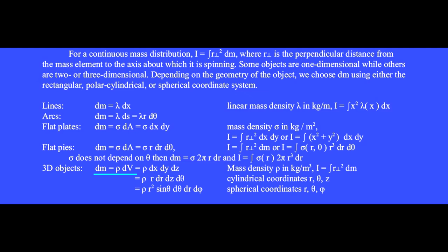In three dimensions, the differential mass is rho dv, where dv is the differential volume. For a block-shaped object, we use rectangular coordinates and the differential volume dv equals dx times dy times dz. In a cylindrically shaped object, the differential volume is r dr dz d theta. For a spherically shaped mass distribution, a differential volume is r squared sin theta d theta dr d phi. Depending on the geometry, this differential mass dm is replaced by one of these, and then the moment of inertia integration becomes one of these.